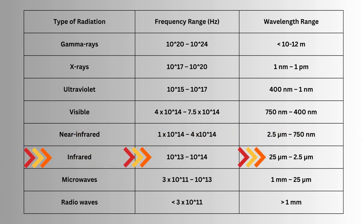Infrared: 10^13 to 10^14, 25 micrometers to 2.5 micrometers. Microwaves: 3×10^11 to 10^13, 1 millimeter to 25 micrometers. Radio waves: less than 3×10^11, greater than 1 mm.